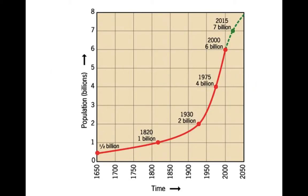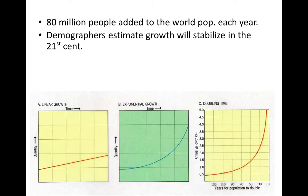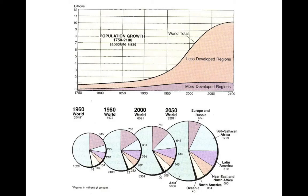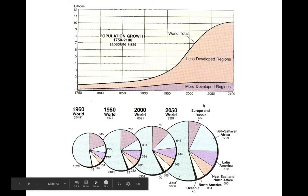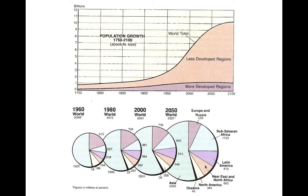About 80 million people are added to the world population every year, but demographers believe that growth will stabilize by the end of the 21st century. Charts also show a projected flattening out of global population. Asia remains the region where the largest share of the world's population lives.